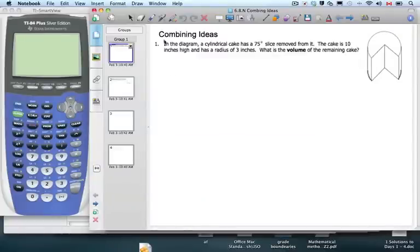It's Mrs. Flynn and Mr. Ruff and we're combining some ideas here to solve some problems. We have this yummy cake here that has a slice removed from it. The cake is 10 inches high and has a radius of 3 inches. What's the volume of the remaining cake? We know 75 degrees have been removed from it.